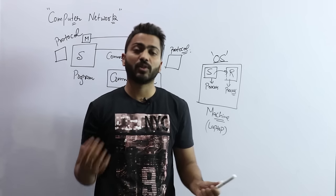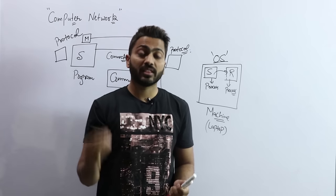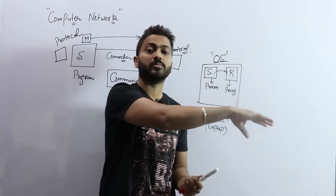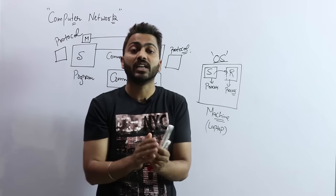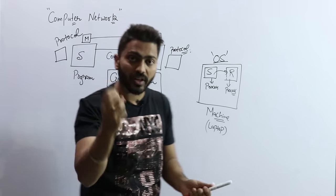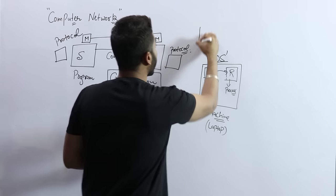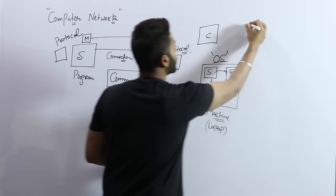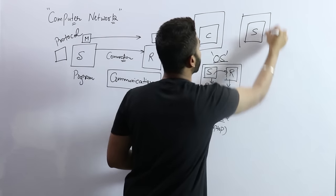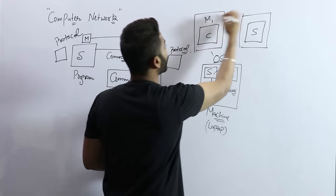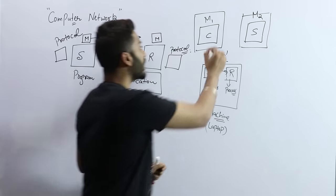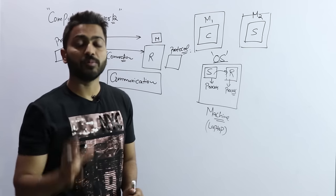The concept of computer network comes when the client is on some other machine and the server is on some other machine — meaning they are physically separated. That is where computer network applies: when the client and server are present on different machines — let's say machine one and machine two.